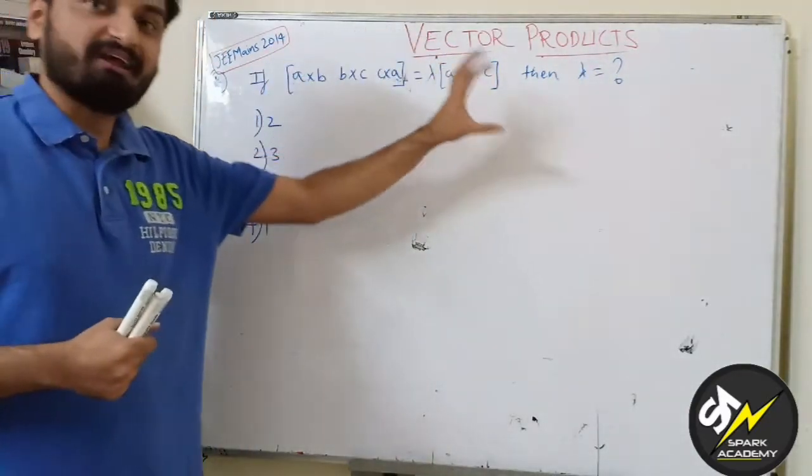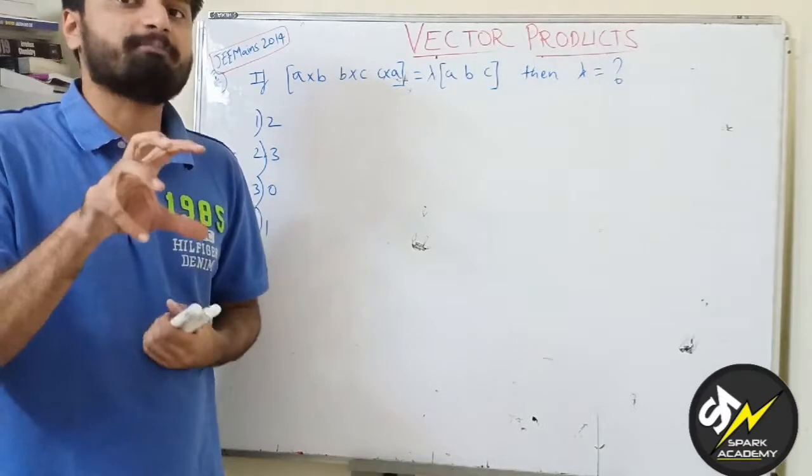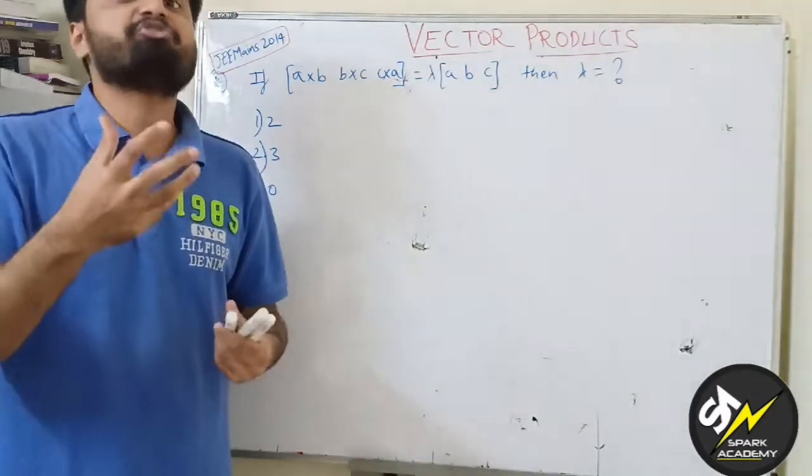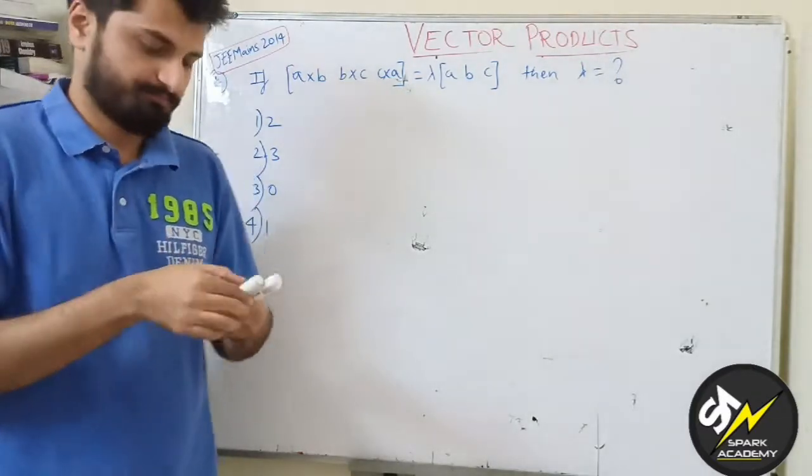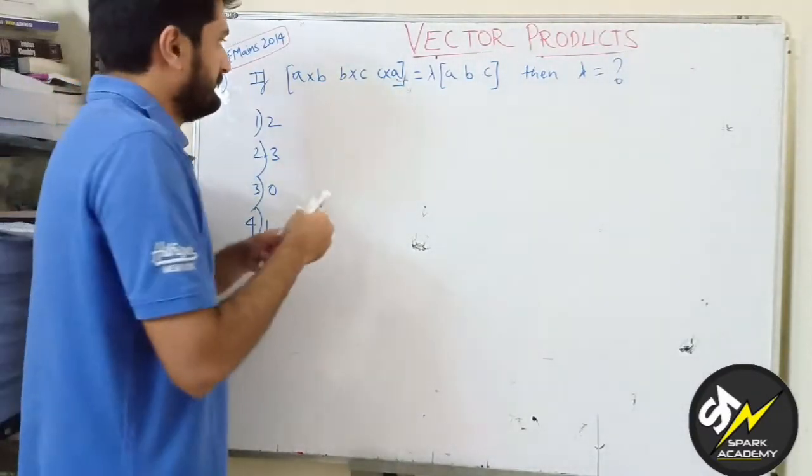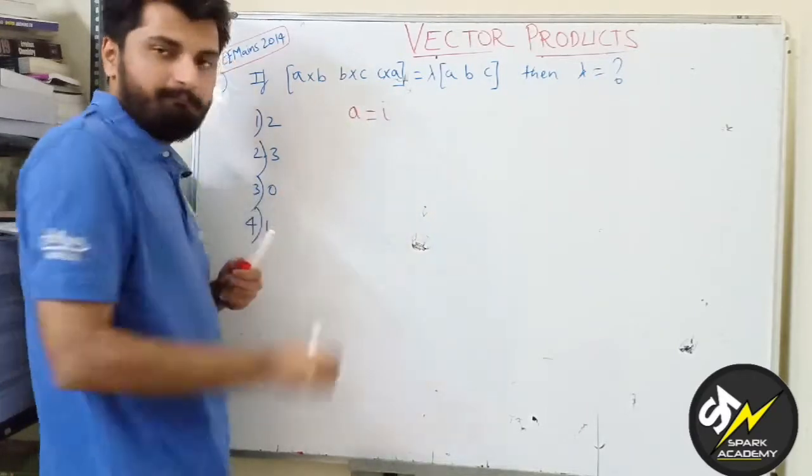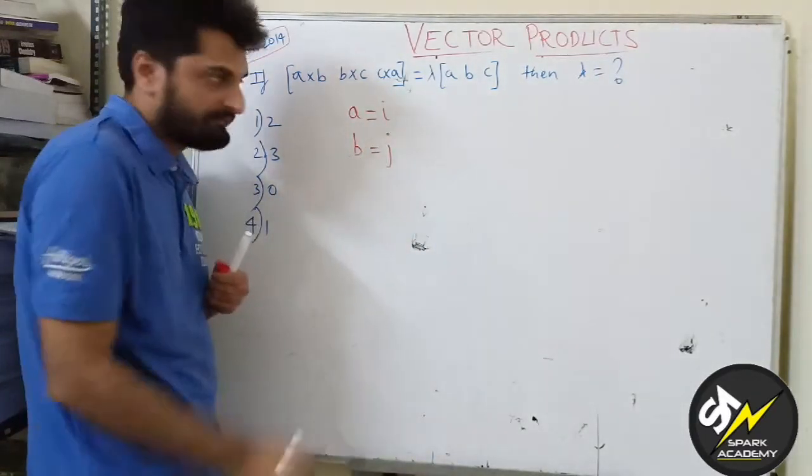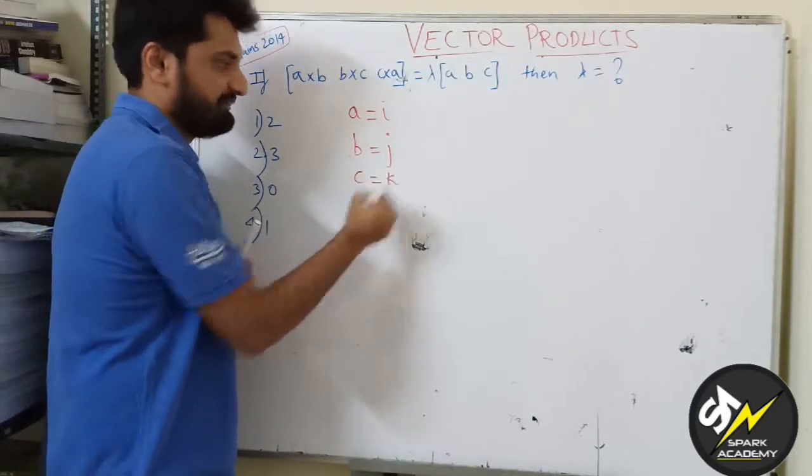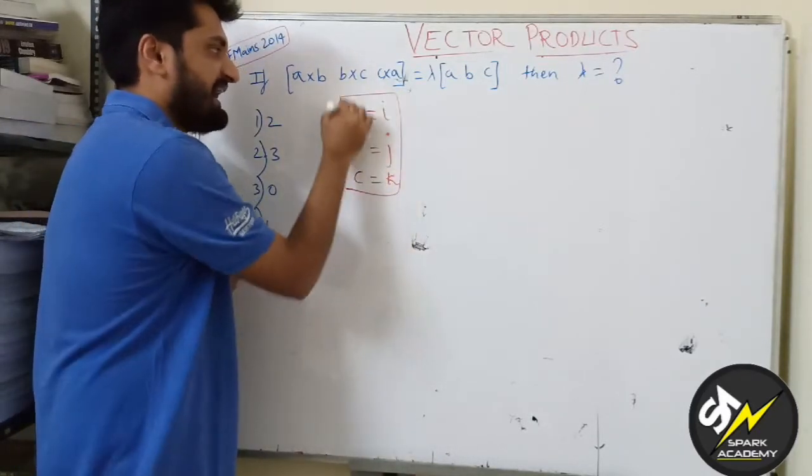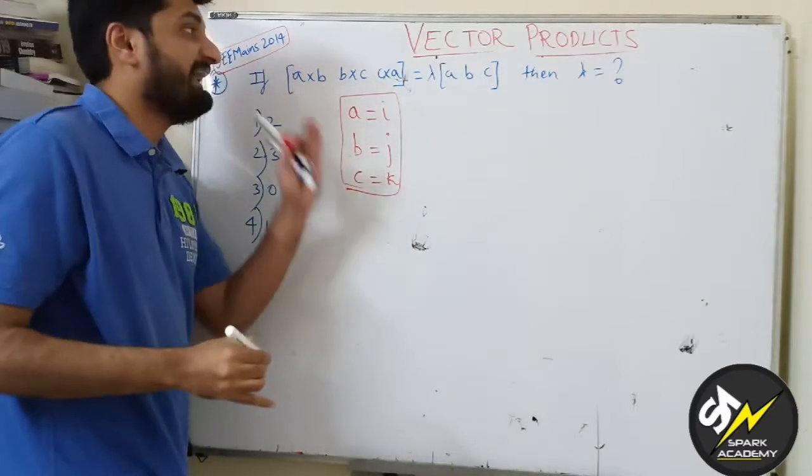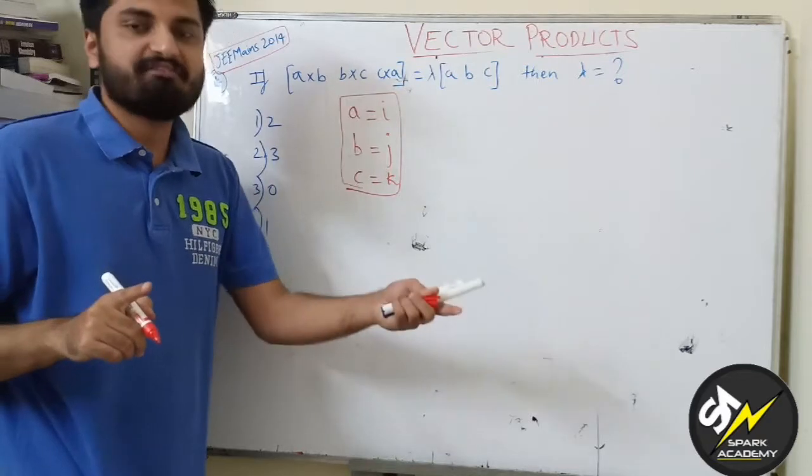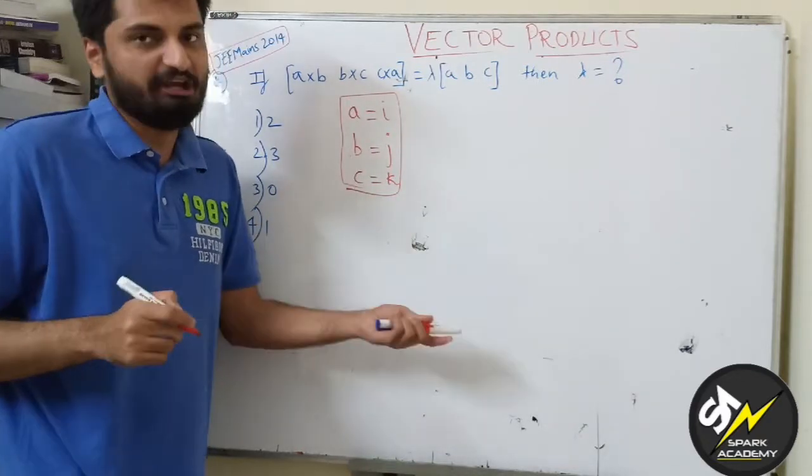This is a property kind of a question. Whenever we observe property questions in triple products, I can assume a, b, c some values. I will assume a value as i, b value as j, c value as k. These are my standard assumptions for any property-based questions, provided the condition is not given.